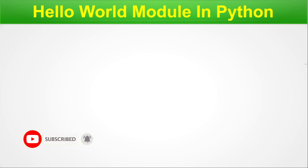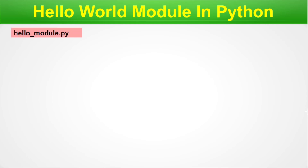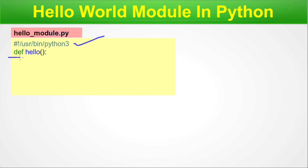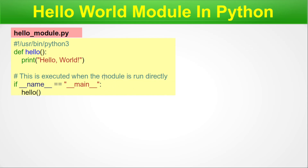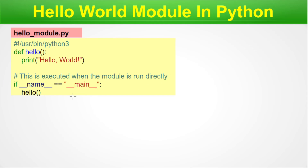Hello World module in Python. Let's code the Hello World example using a Python module. Here is our hello_module.py. The first line is the shebang: #!/usr/bin/python3 — the Python interpreter. Next we have the function definition 'def hello()' with 'print("Hello World")' in the body. This is executed when the module is run directly: if __name__ == '__main__', then call hello(). This will print Hello World using the main namespace.